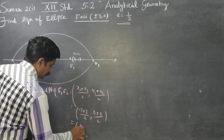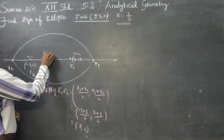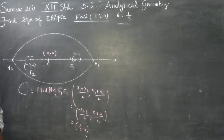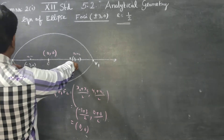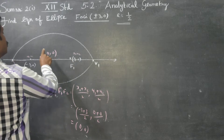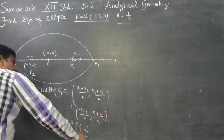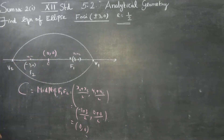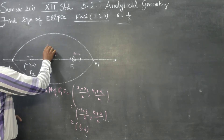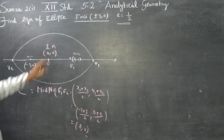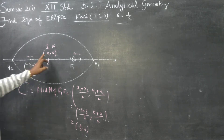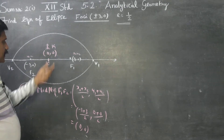The answer will be 0, 0. This is my h and this is my k. So h, k — the center — is at (0, 0).